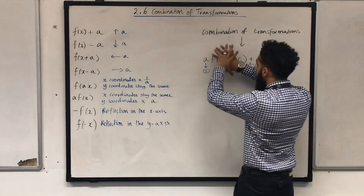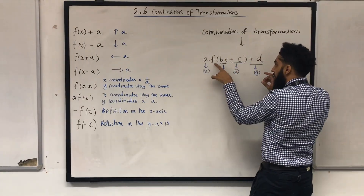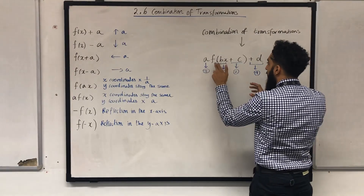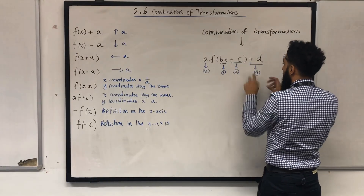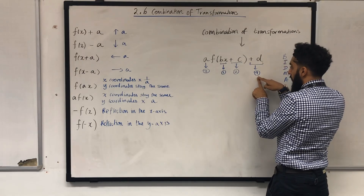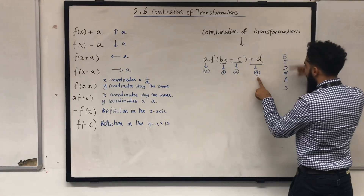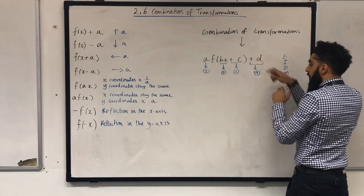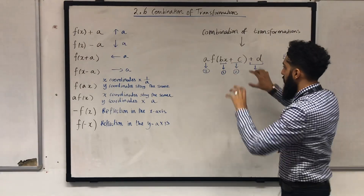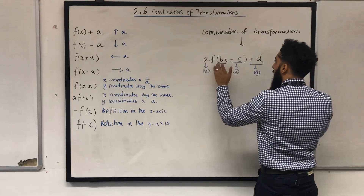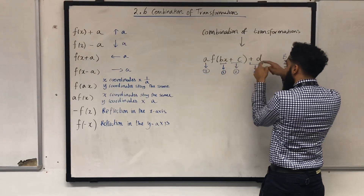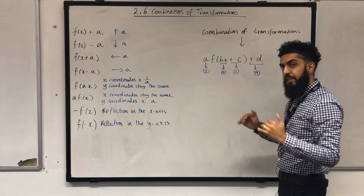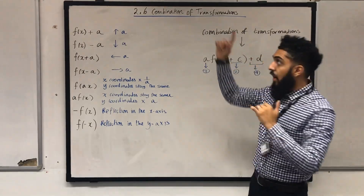Once you've obtained the graph of a f of bx plus c, the final step is to obtain the graph of a f of bx plus c plus d. This plus d is the fourth step in BIDMAS — you add at the end. So what you have to do to obtain the graph of a f of bx plus c plus d is take the graph of a f of bx plus c and shift it d units upwards.